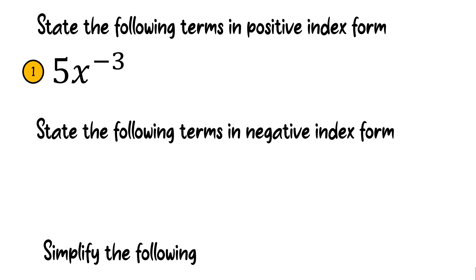Number 1: 5x to the power of negative 3. We will change the term from negative index form to positive index form. Because the 5 is in front, we don't need to put 1 over for the whole expression. You just put 5 over x to the power of 3. That is the final answer.